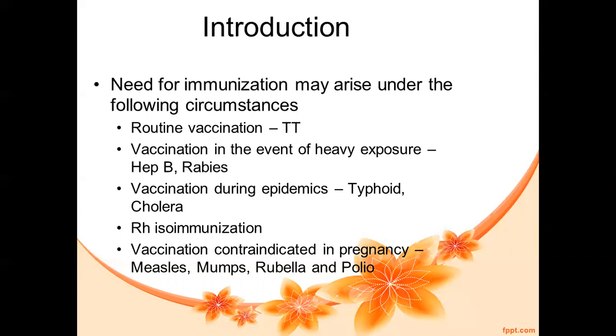Vaccines contraindicated during pregnancy include measles, mumps, rubella, and polio — all live vaccines are contraindicated. The routine vaccination is TT (tetanus toxoid). In the event of heavy exposure: hepatitis B and rabies. During epidemics: typhoid and cholera.